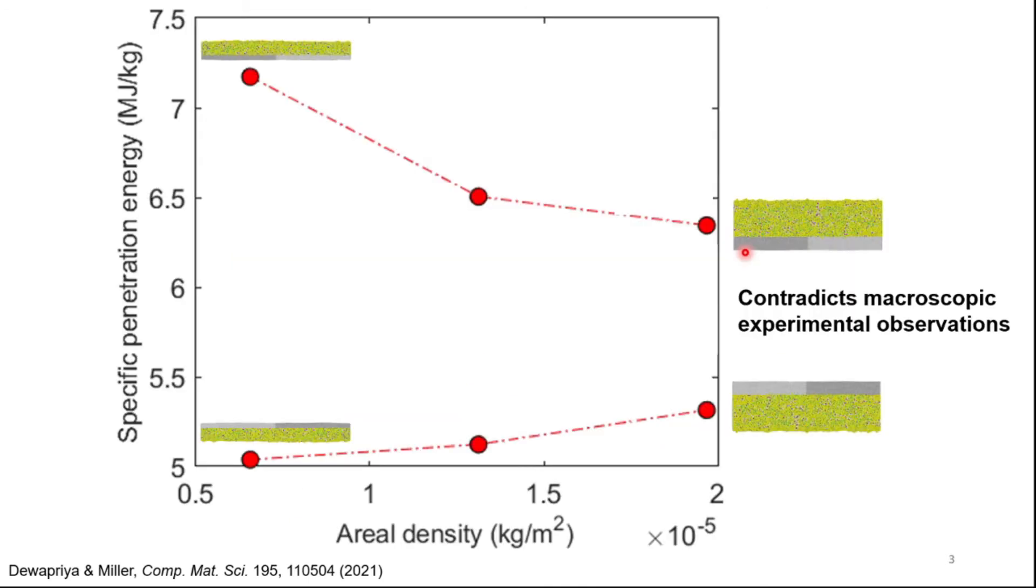Based on these simulations, we computed the specific penetration energies, that is the energy absorbed by the unit mass of the target material in the strike phase area. The specific penetration energy of the target with the polymer on the strike phase area is higher compared to the target with aluminum on the strike phase. This observation contradicts the macroscopic experimental observations due to the difference in the energy dissipation mechanisms at the two length scales.